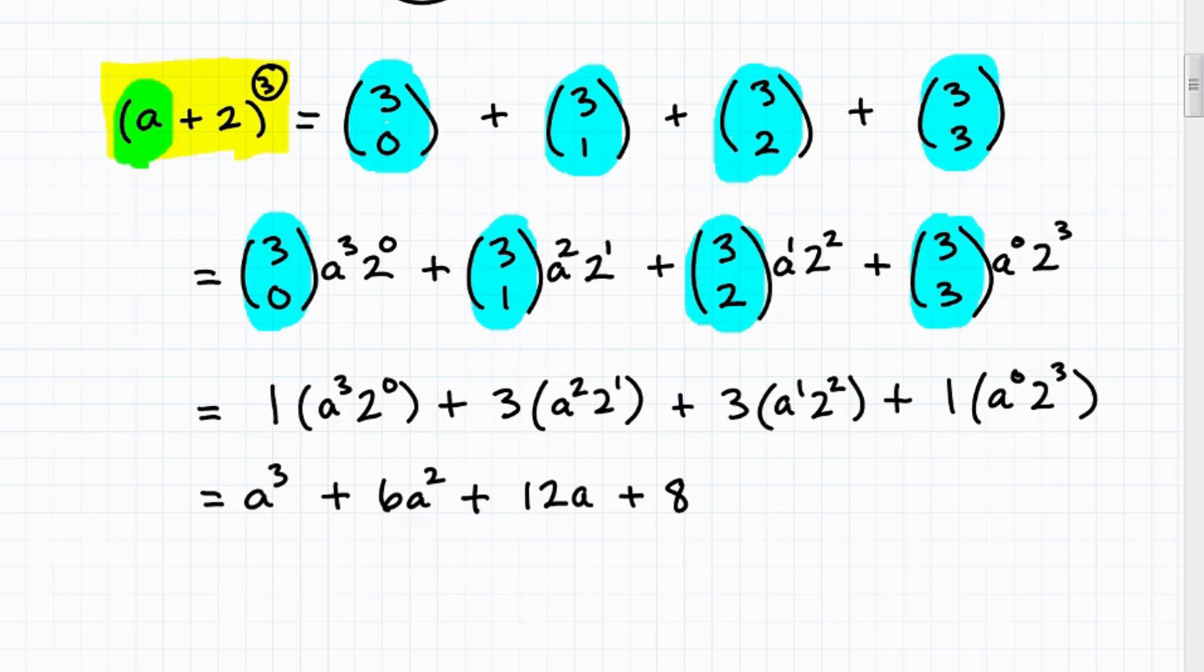So remember, we're going to start, always start with the highest power of this first component of the binomial. This first part of the binomial, which is A. We're going to take this to the third power. That's what I have right there. And then here, this guy is, we're going to write it down, but that's going to be the zero power. You always start, whatever this number is, if it's three, this is going to go, our very first term is going to be A cubed times two to the zero, because all of these exponents, these exponents here have to add up to three always. So this is our first term. Now we just have to follow the pattern.